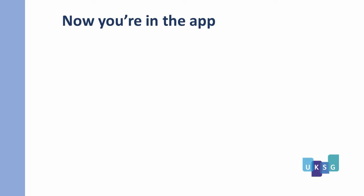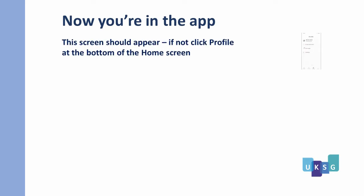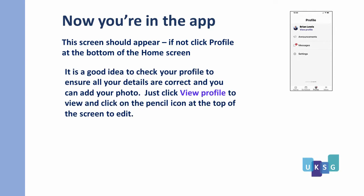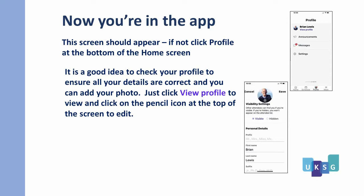Now you are in the app proper. This screen should appear — if not, click Profile at the bottom of the home screen. It is a good idea to check your profile to ensure all your details are correct, and here you can add a photo. Just click on View Profile to view and click on the pencil icon at the top of the screen to edit.